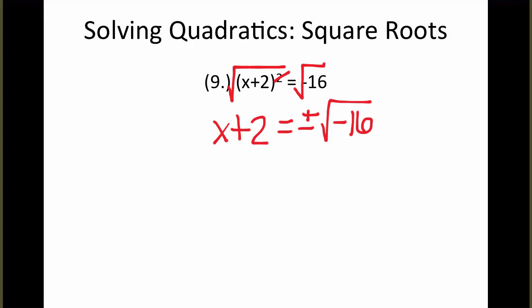Now, when we take the square root of a negative, it introduces an imaginary number. So the square root of 16 is 4, but because it was a negative, it will be 4i. So we end up with x plus 2 equals positive or negative 4i.